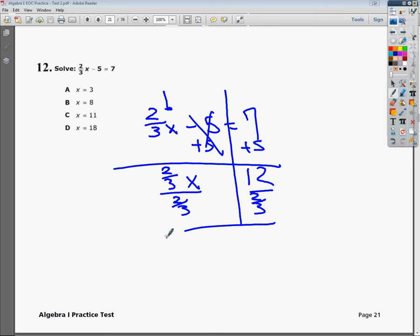And you can either type 12 divided by 2 thirds in your calculator, or you can use the old elementary school keep it, flip it, switch it thing. I'm going to flip the fraction over since I'm dividing by it, and then just multiply. 12 times 3 is 36. 2 times 1 is 2. 36 divided by 2 is 18. So my final answer for x is that it's 18.